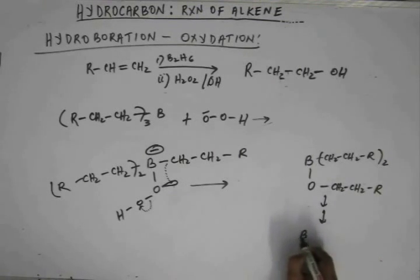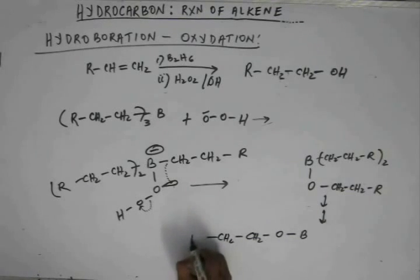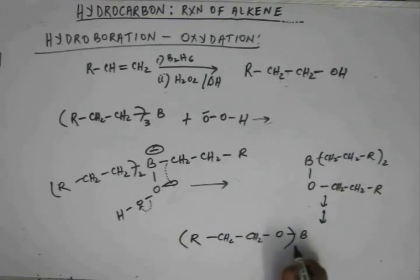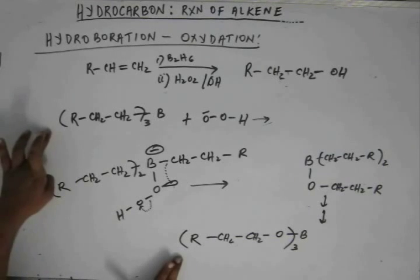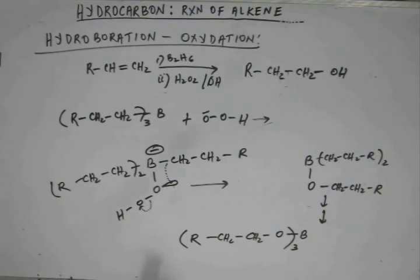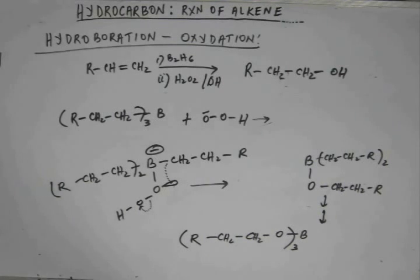What we will have after repetition of this step two more times is this R part will have now trialkoxy boron instead of trialkyl boron. This is hydroboration. Hydroboration has been done. And now, we are going for the last step of oxidation.